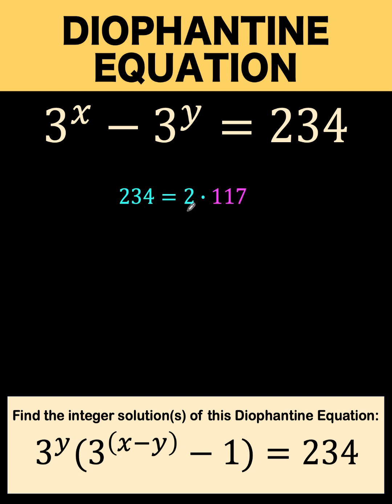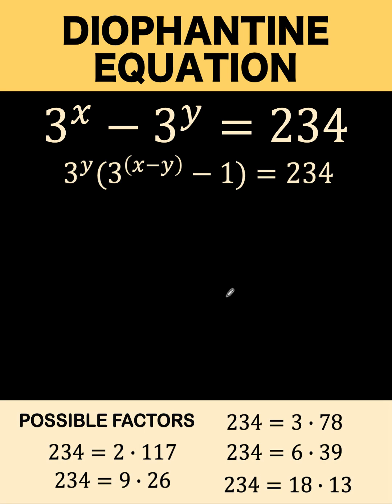234 is divisible by 2, divisible by 3, divisible by 6, divisible by 9, and divisible by 18. So we have five combinations. Let's recall these combinations and we are going to have five cases here.